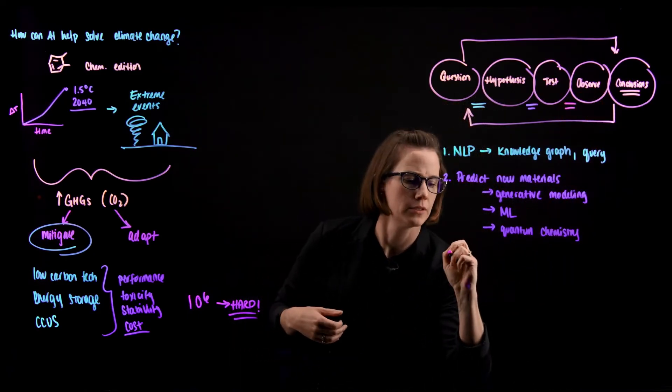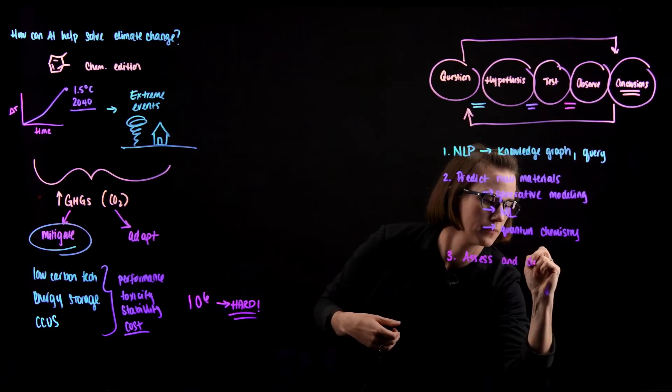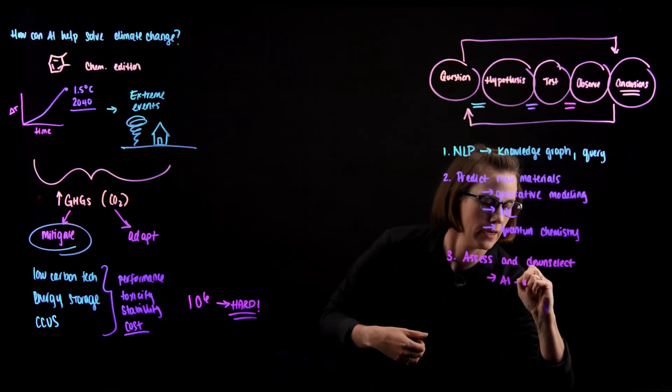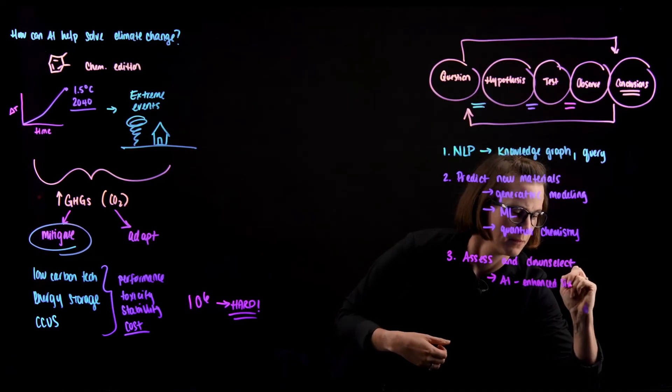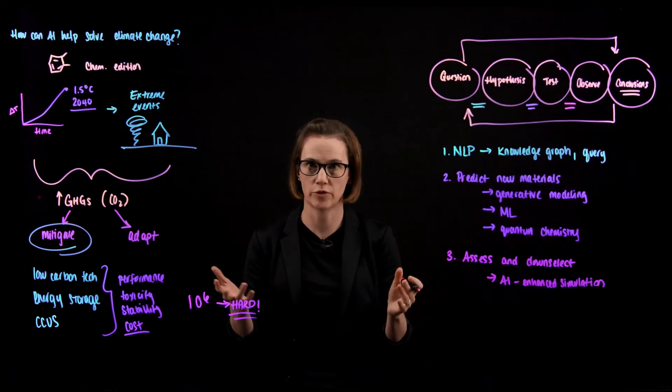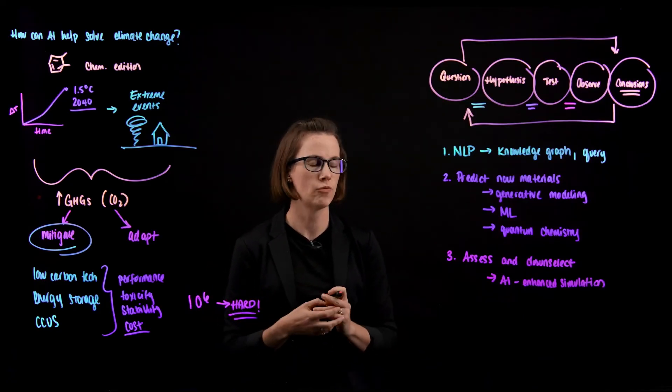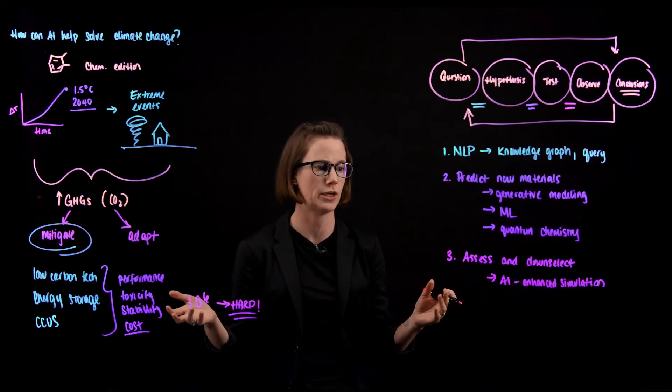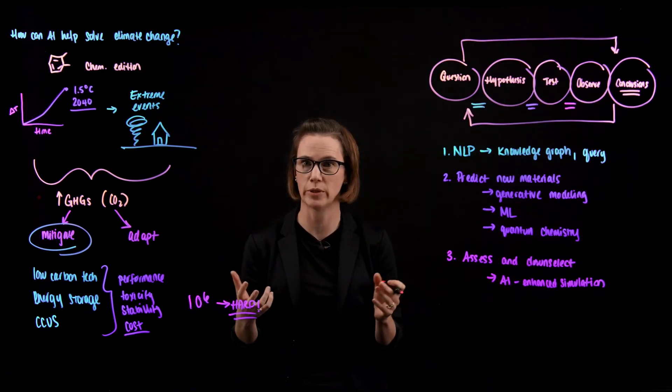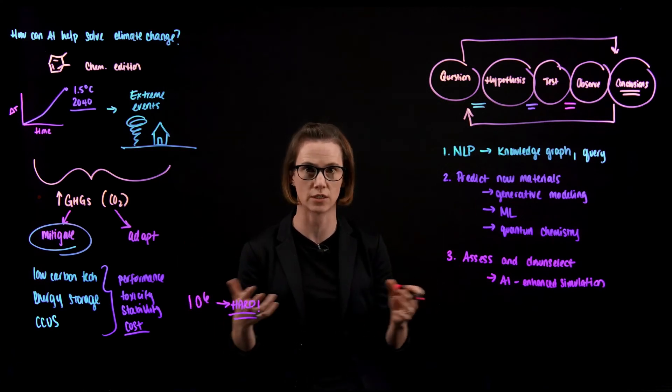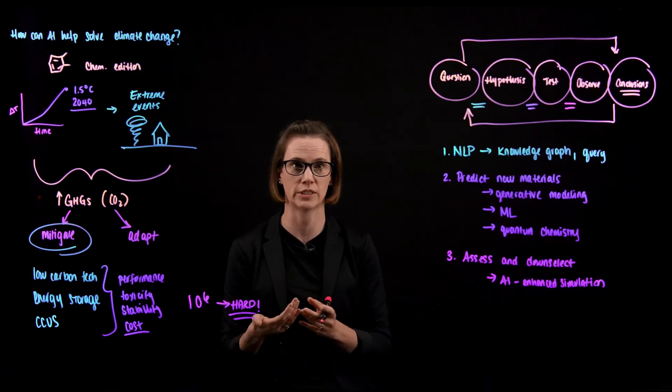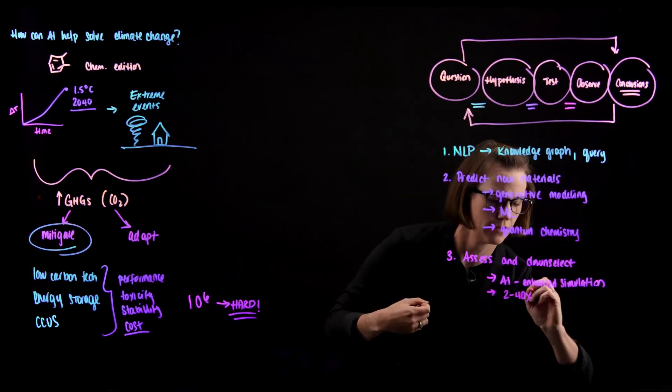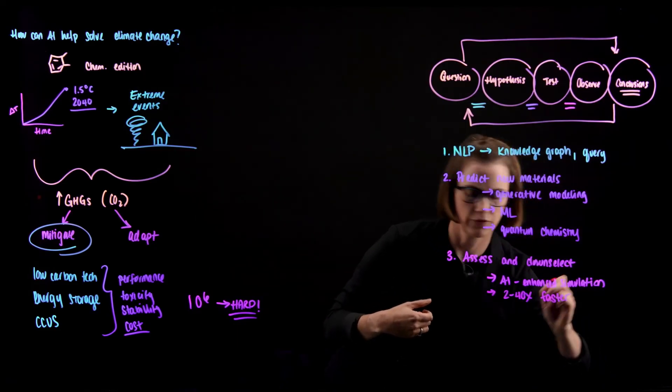Then we can start to look at their performance. So we can assess them and down select. And this is really before we even get into a chemistry lab. So we can use AI enhanced simulation to predict how different materials will perform under certain conditions. So for example, if we're able to predict new candidates of monomers that can create a polymer that we can use as a membrane to separate CO2 from nitrogen, we can simulate that membrane. And then we can look at its permeability and selectivity for carbon dioxide versus nitrogen versus NOx versus SOx versus other contaminants. And we can do this in a way that's higher throughput than we could do in a laboratory setting. And it's much cheaper because we don't have to go create all of these membranes from scratch. And this really drives up the efficiency. So we know that this increases efficiency several orders of magnitude. And it makes a big difference on our ability to discover new materials.